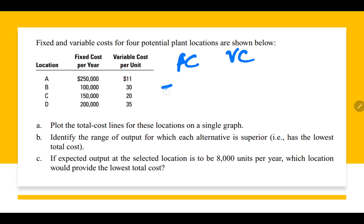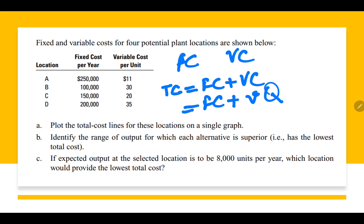The formula of total cost is: Total Cost = Fixed Cost + Variable Cost. Since variable cost depends on how many units will be produced, it becomes Fixed Cost + (v × Q), where v is variable cost per unit and Q is number of units. We have to plot the total cost lines, and then identify the range of output for which each alternative is going to be superior.